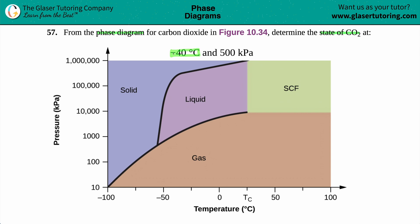Since negative 40 is in Celsius, that's your x-coordinate, and 500 kilopascals is the y-value. In essence, we're just trying to find a point, and that point is (-40, 500).